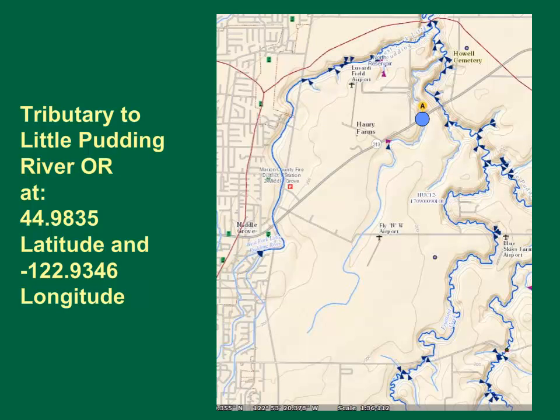Now, try to delineate the basin for the stream crossing State Route 213 near Salem, Oregon. The latitude is 44.9835 and the longitude is minus 122.9346.